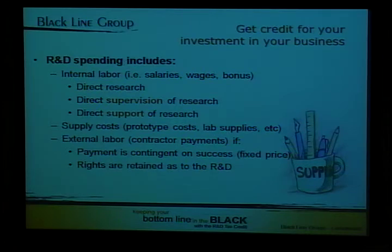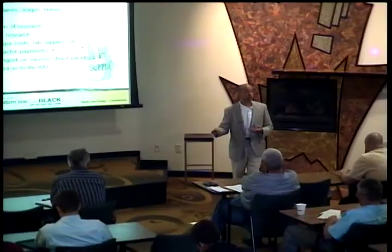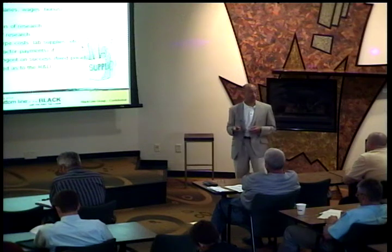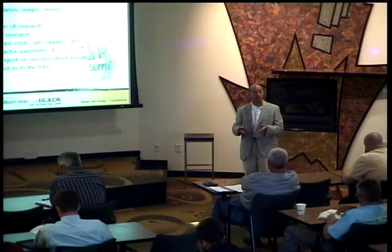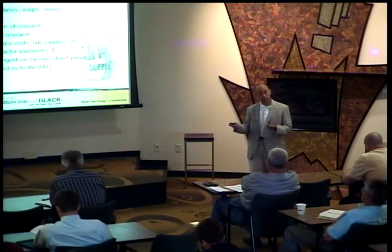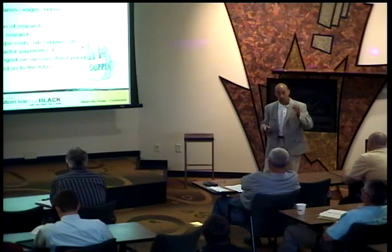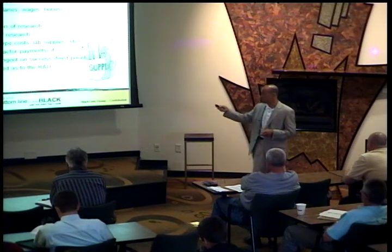The second bucket is supply costs. To the extent that you're doing modeling, prototyping, and testing, and you're using up supplies as you try to figure things out — sometimes you may be trying to develop a market that doesn't exist yet. You have no orders; you're just trying to create something for some market out there, and that's money out of your pocket. That can be qualified supplies. And sometimes you'll have orders from customers but are still figuring things out, and you can have supply costs there as well. Supply costs are the second bucket.